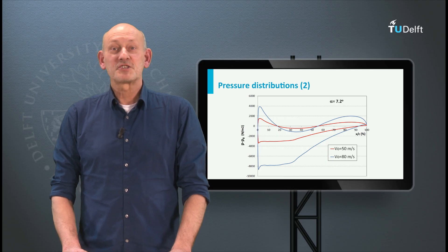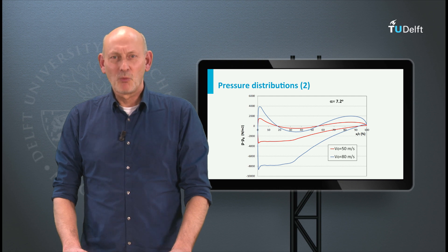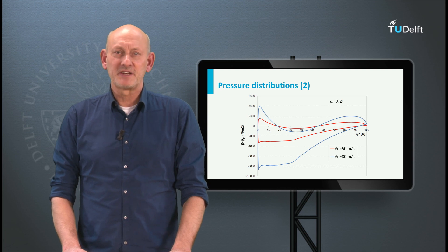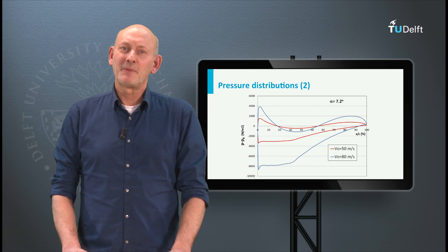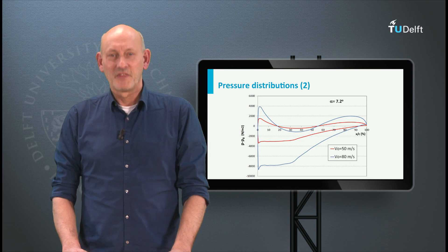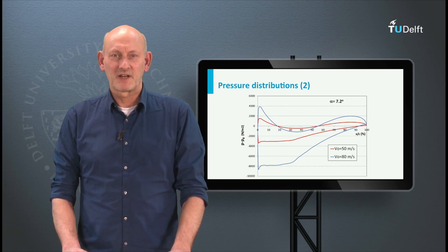Let's focus on the blue line. The lower part of the line is the flow over the upper surface. As you can see, the static pressure first decreases quite rapidly, then remains approximately constant until about 30% of the chord, and then increases again towards the trailing edge.